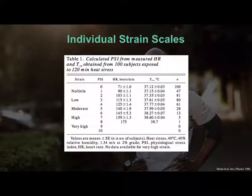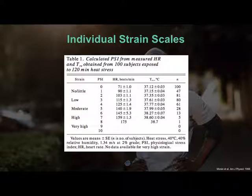Sitting for two hours in the heat at 40 degrees, 40% humidity. Over those two hours, no one ended up at a PSI of 10. If we had reached 39.5 degrees and 180 beats per minute, that would characterize a PSI of 10. The highest response was 175 beats per minute and 38.7 degrees Celsius core temperature exhibited by just one individual — demonstrating the high variability in potential responses.